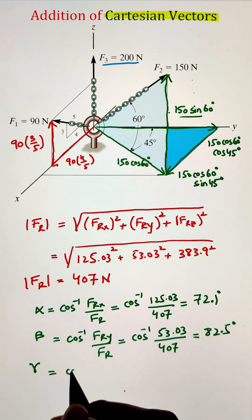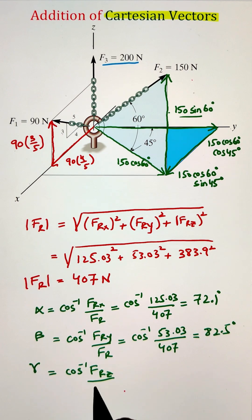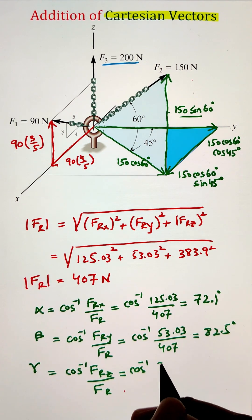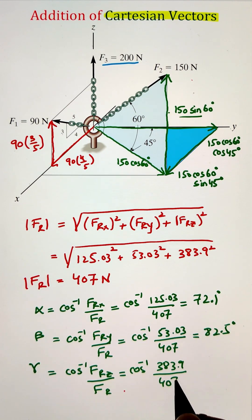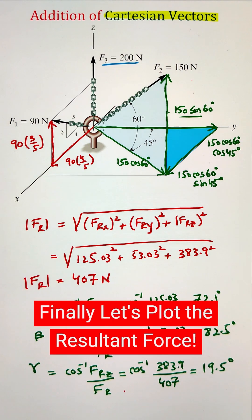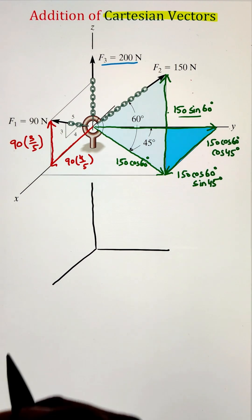Respectively, beta is coming as 82.5. That is the angle it is making from the Y axis. And finally, the gamma, the angle the force makes along the Z axis is coming as 19.5.